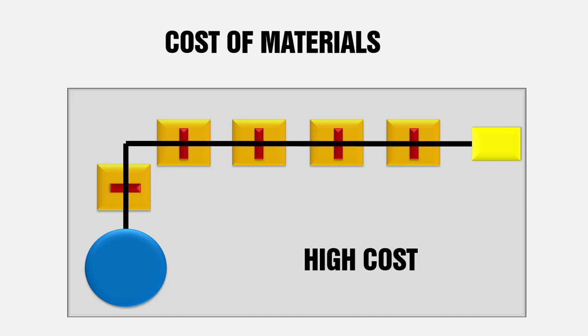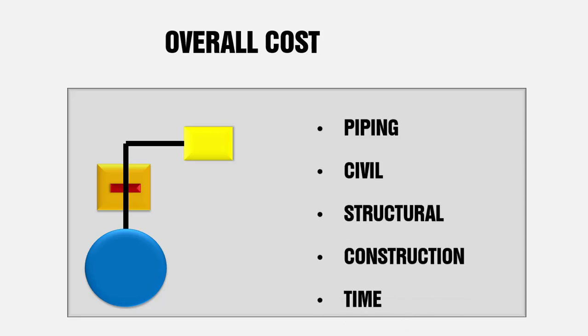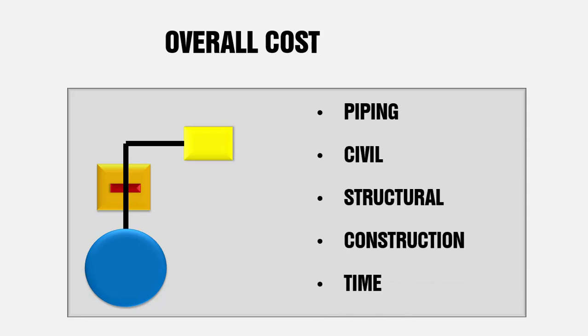Now I'll show you what the difference is — how you can effectively reduce cost by planning the layout. With the same plot, if I bring the pump near to the tank, I still meet the process requirement of laying piping from pump to tank, and it is always better to have the pump near to the source. Now I've laid the piping and only need one structural support and one civil support. This reduces the overall cost — not only for piping, but also for civil structures and construction activities.